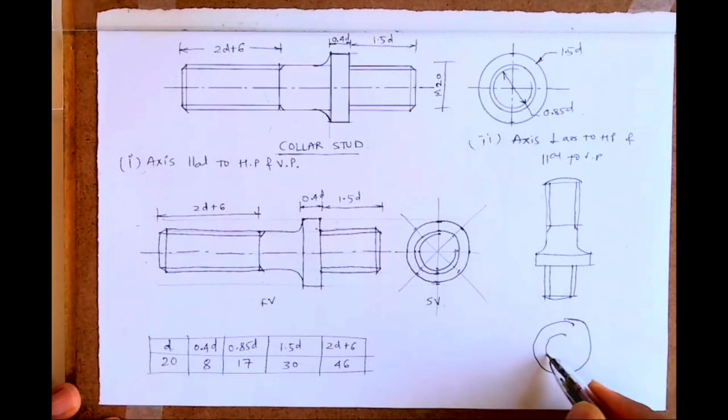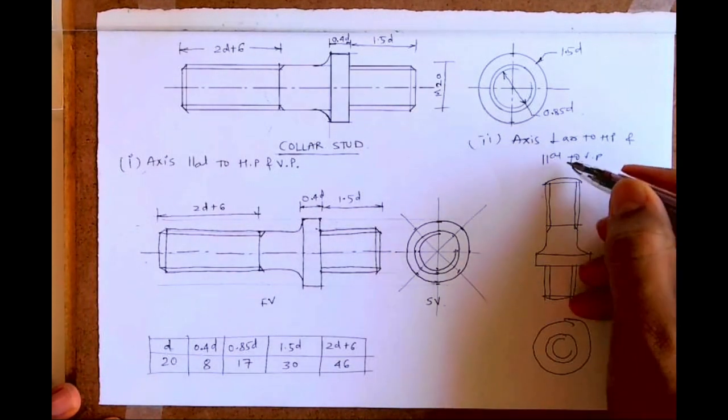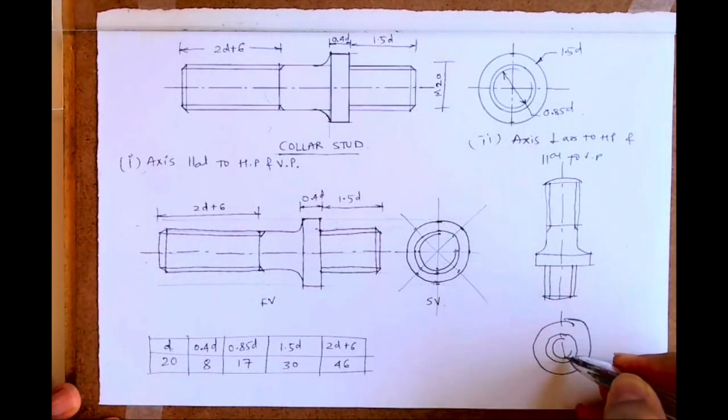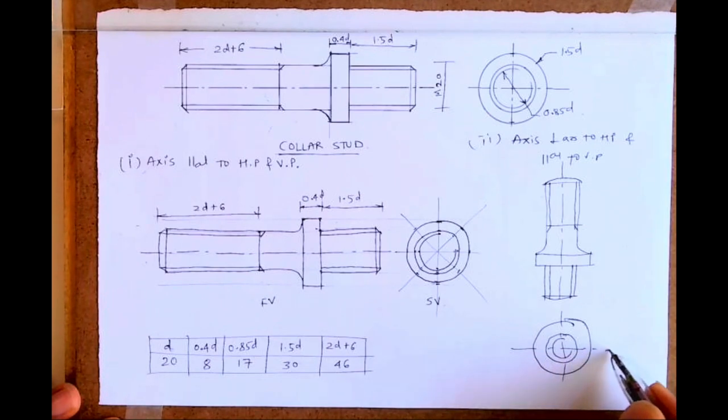This is external threading, so that's why outer circle is full, inner one is three-fourth. So I hope you people have understood this. Thank you.